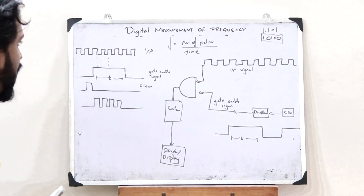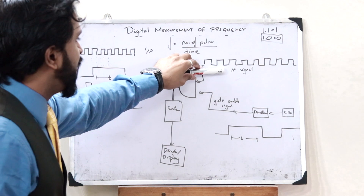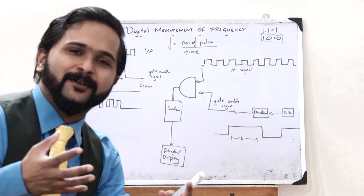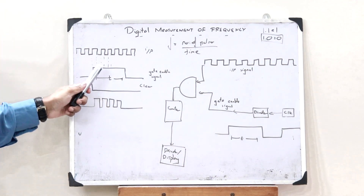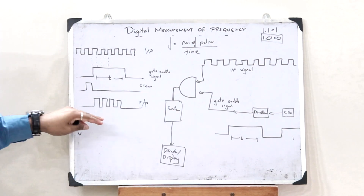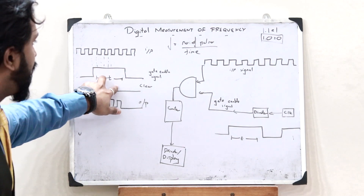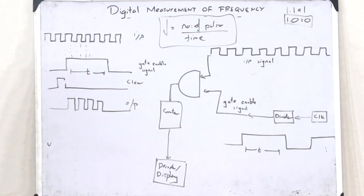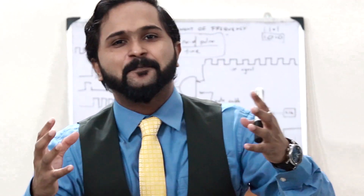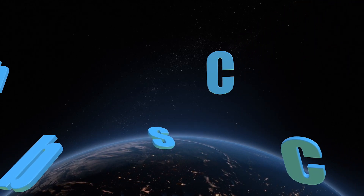So this is how we can find the frequency of a particular signal — as simple as that. We give the input signal along with the gate-enabled signal to an AND gate. Using the AND gate property (1·1 = 1 and 1·0 = 0), we get an output from which we count the number of pulses present in the known time period, and by dividing these two, we obtain the frequency. This is the basic principle behind the digital measurement of frequency. I hope you now have a clear understanding of how to digitally measure the frequency of a particular signal.